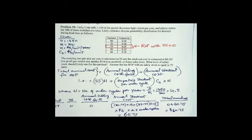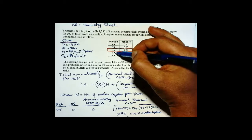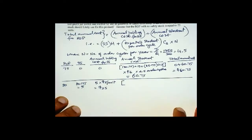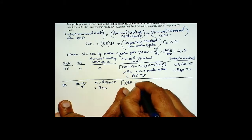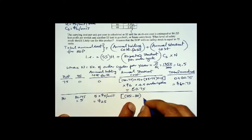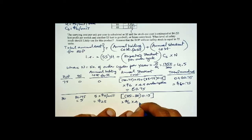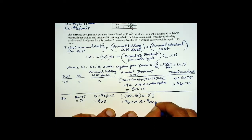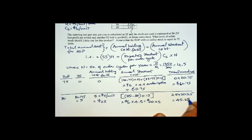With ROP set to 80, if the demand is 60, 70, 75, or 80 there will be no stock out. Stock out occurs only if demand is 85: 85 minus 80 is 5 units, at probability 0.15. That expected stock out times $6 times 4.5 order cycles gives $20.25. So total annual cost is $25 plus $20.25 equals $45.25.